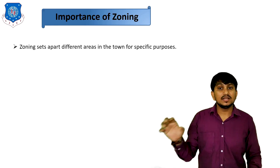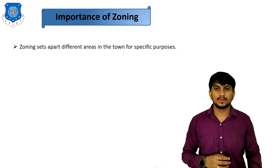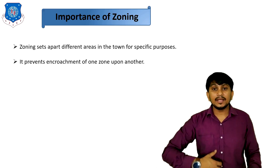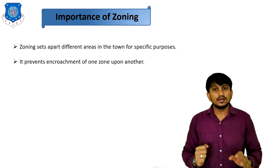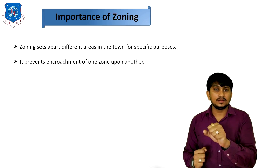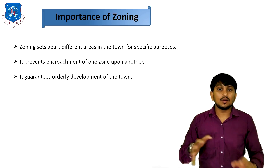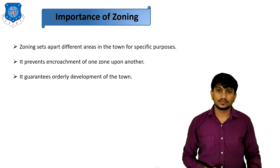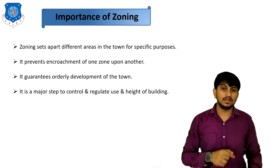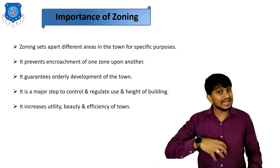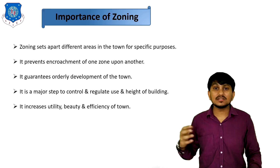Zoning is important because it sets apart different areas in a town for specific purposes and prevents encroachment of one zone upon another — for example, it regulates the number of industries in residential areas. It guarantees orderly development of the town, is a major step to control and regulate the use and height of buildings, and increases the utility, beauty, and efficiency of the town.